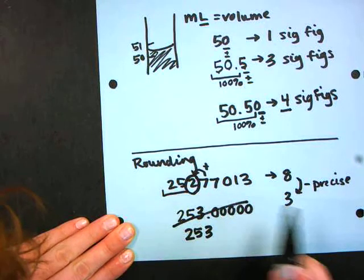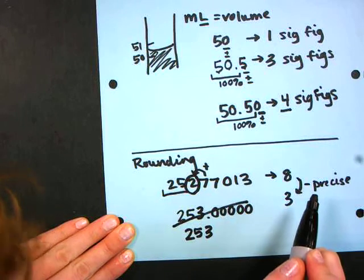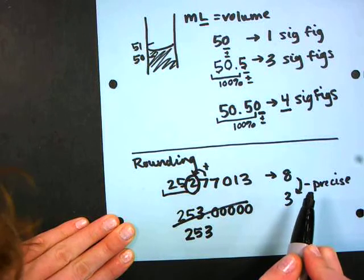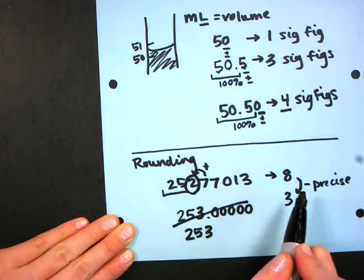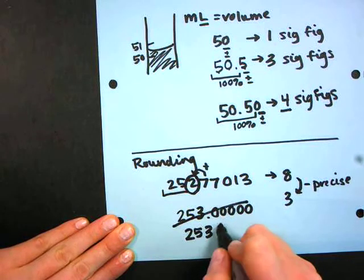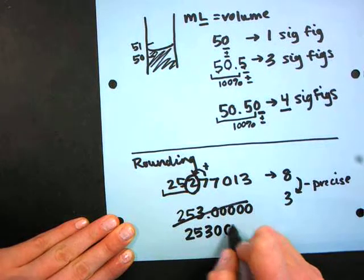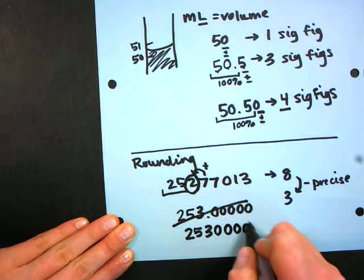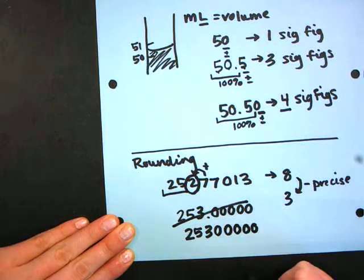And we're just working with precision, right? So we're not trying to change the number, we're just trying to change how precise we were. So in order to change that precision I'm going to add all those zeros back onto the end.